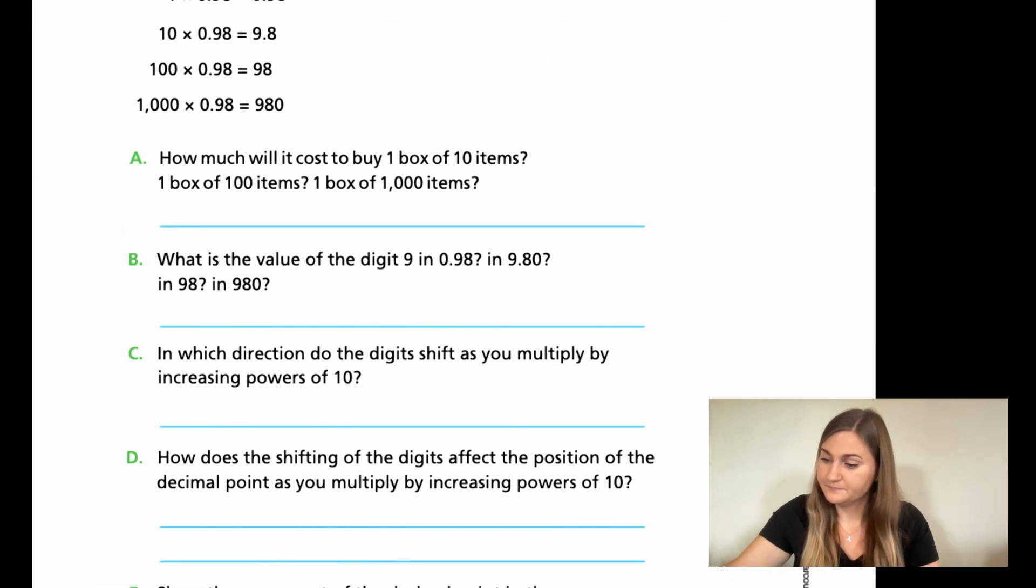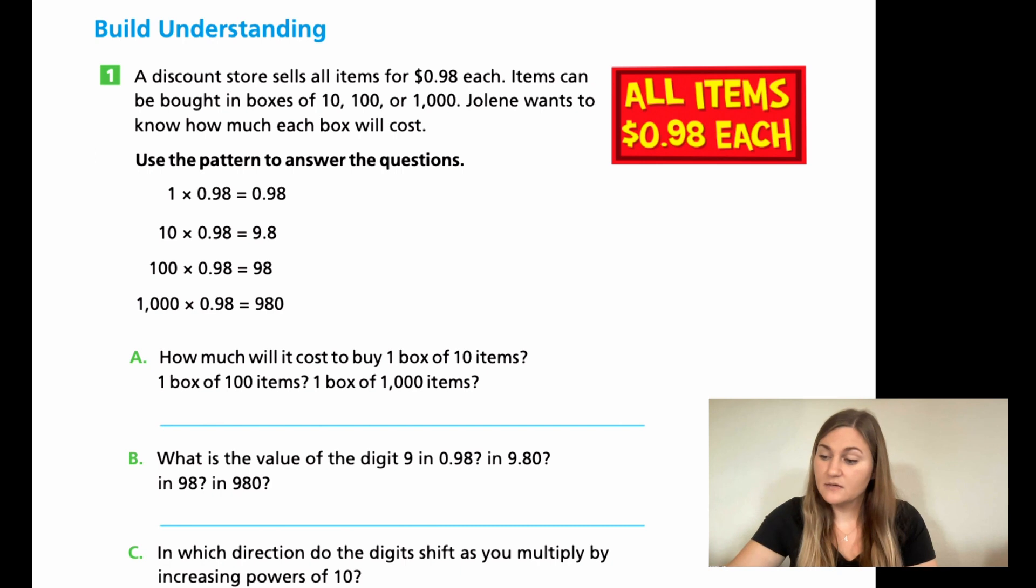It says a discount store sells all items for 98 cents each. Items can be bought in boxes of 10, 100, or 1,000. Jolene wants to know how much each box will cost. So it shows the pattern here. One times 0.98 is just 0.98. It doesn't change.